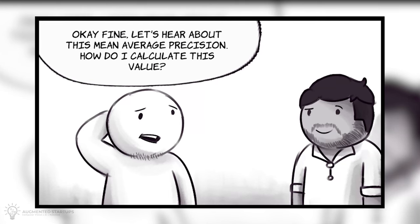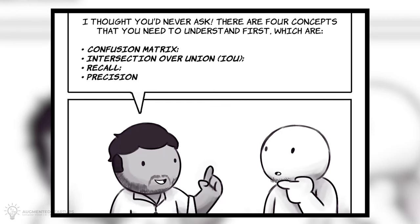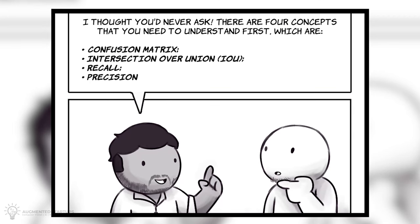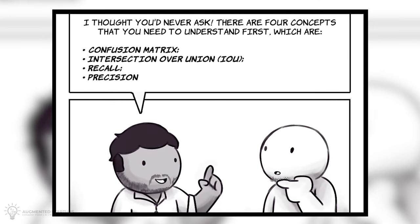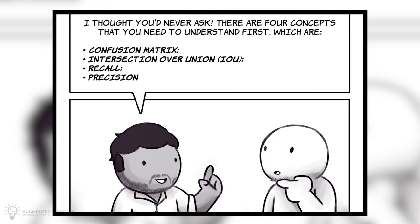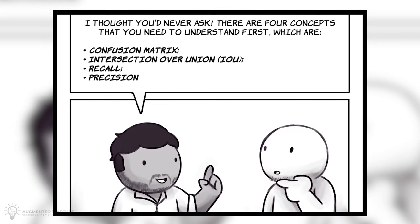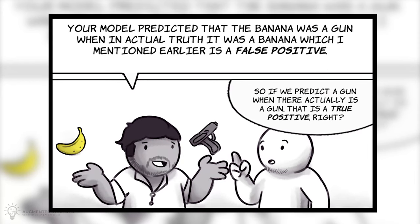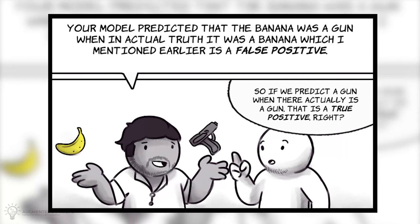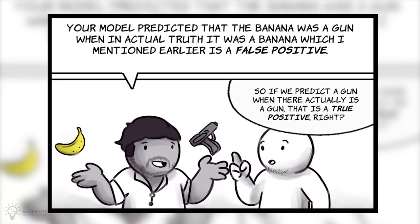Let's hear about this mean average precision. How do I calculate this value? I thought you'd never ask. There are four concepts that you need to understand first, which are confusion matrix, intersection over union, or IOU, recall, and precision. Your model predicted that the banana was a gun, when in actual truth, it was a banana, which I mentioned earlier is a false positive.